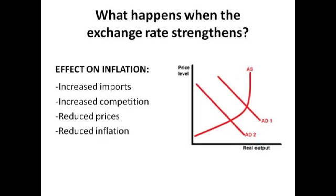A strengthened exchange rate actually leads to a decrease in inflationary pressure. Domestic suppliers face competition from lots of cheap imports, because imports from other countries appear very cheap to UK consumers. So UK firms actually have to work very hard to cut their costs in order to compete, which leads to a lower level of prices in the whole economy — a reduced price level, as you can see on the aggregate demand and aggregate supply diagram.